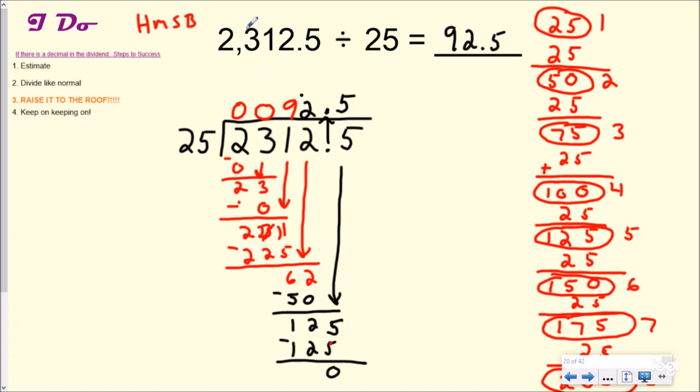And so your answer should be 92 and 5 tenths. If you had estimated this earlier, maybe you round this up to 2,500, which means 2,500 divided by 25 should be about 100, which makes you know that your decimal needs to be in between the 2 and the 5, just in case you forget. You can always use your estimate to make sure your answer is reasonable. So let's try you try.